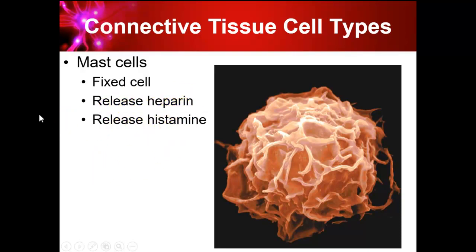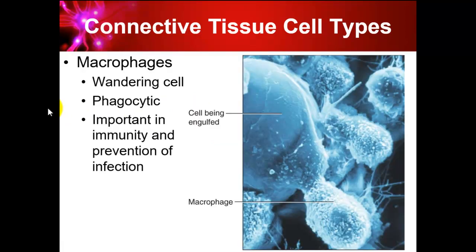Mast cells also release histamine, a biochemical that makes capillaries leak fluid, causing swelling. The whole idea of inflammation is to localize an area so infection doesn't spread — it's part of both the healing process and the immune response. Macrophages are large white cells that engulf and eat other cells; they're derived from monocytes.